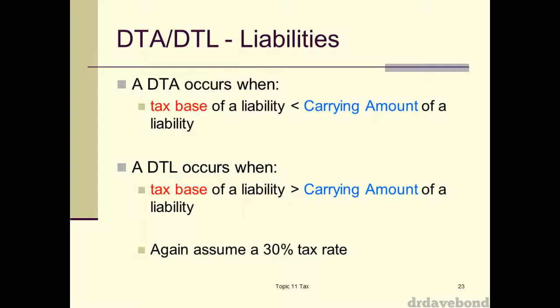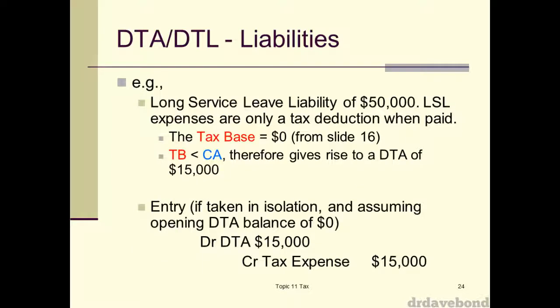95% to 100% of the time, you can be pretty much sure that a liability, if there's a temporary difference, you're going to end up with a DTA. That also means on the flip side, if you have an asset with a temporary difference, 95% of the time it's going to be a DTL. The example for this is the long service leave liability — we've got $50,000 sitting there, we've worked out the tax base of zero. We know it gives rise to a $15,000 deferred tax asset because we're going to be paying less tax in the future. So this is a deductible temporary difference. We debit deferred tax assets by $15,000 and credit tax expense by $15,000, so the amount of your tax expense actually drops.